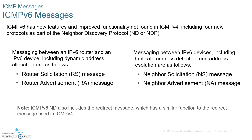A PC sends out a neighbor solicitation in two cases: when doing something similar to ARP, requesting the MAC address of a neighbor in the LAN, or telling the network, does anybody have this host ID that I just generated for my IPv6 address? This second use is called DAD — Duplicate Address Detection. Neighbor advertisement, or NA, is when the device responds back to the NS — either giving you its MAC address, or telling you that there is a duplicate address and you can't use it.